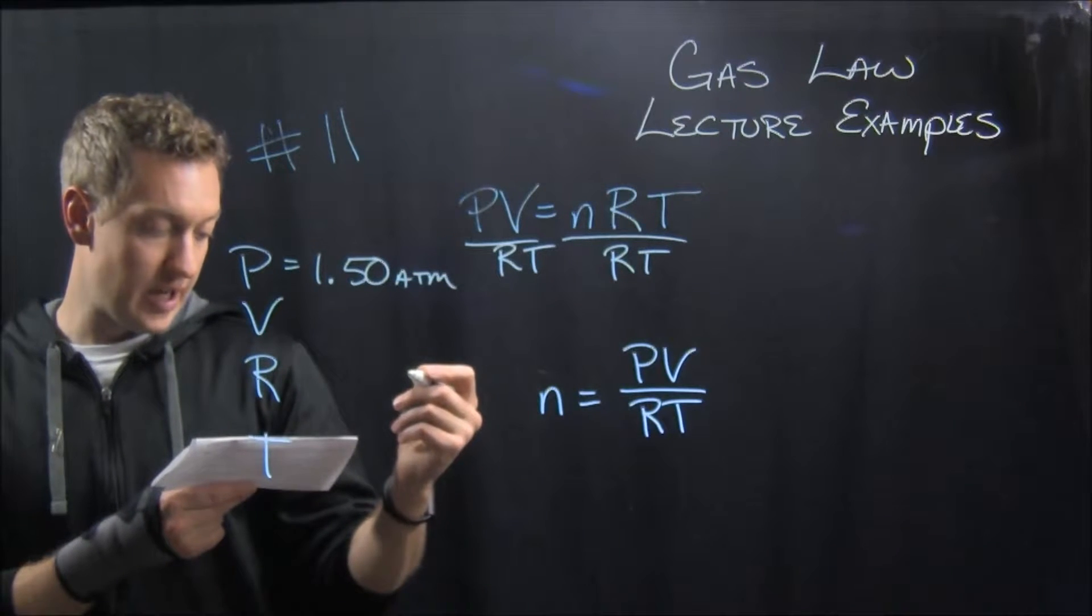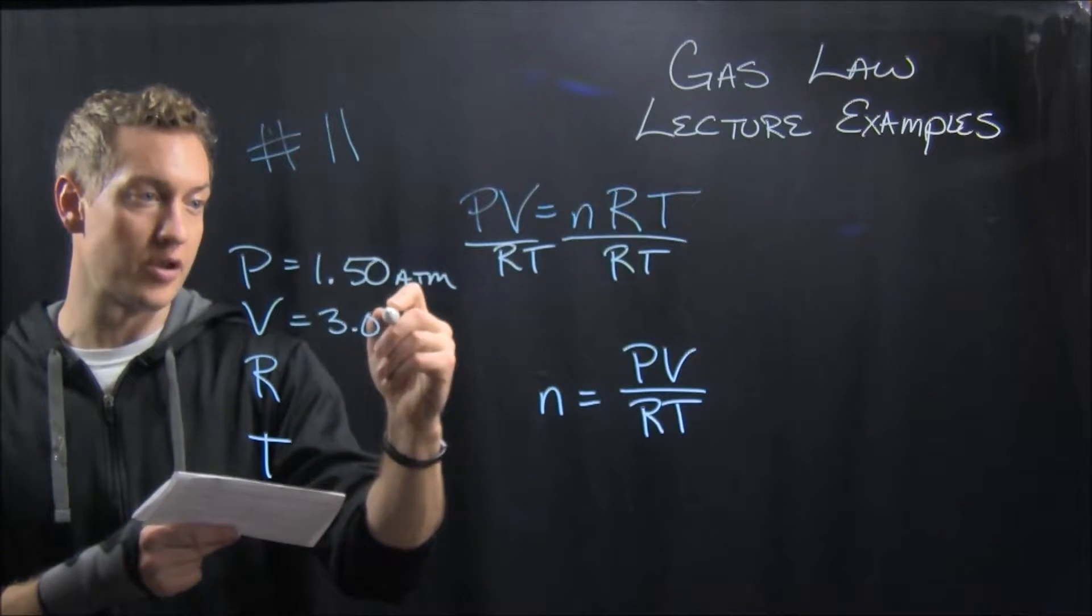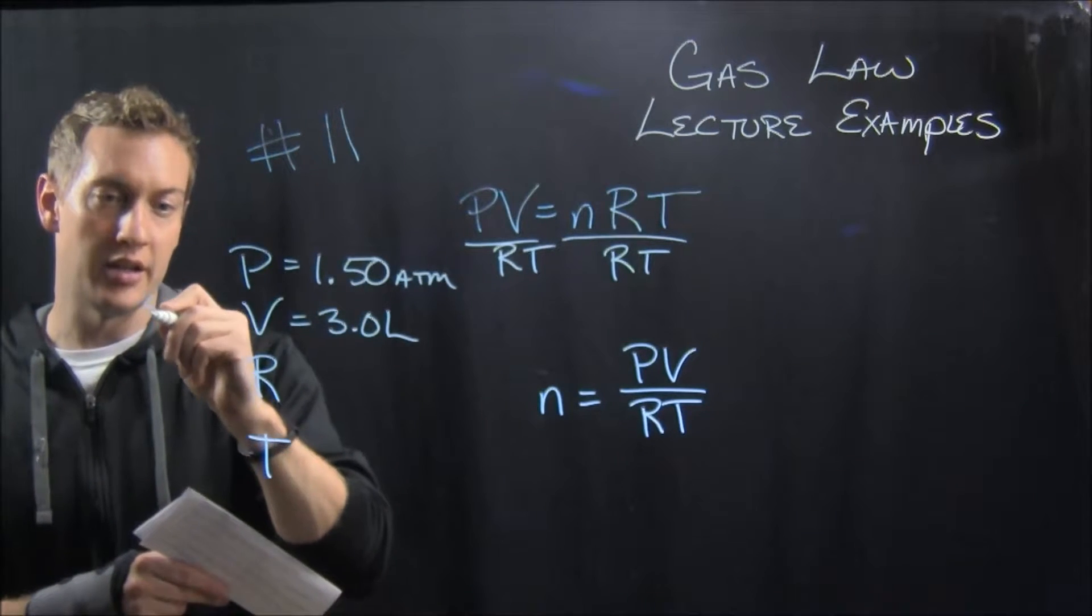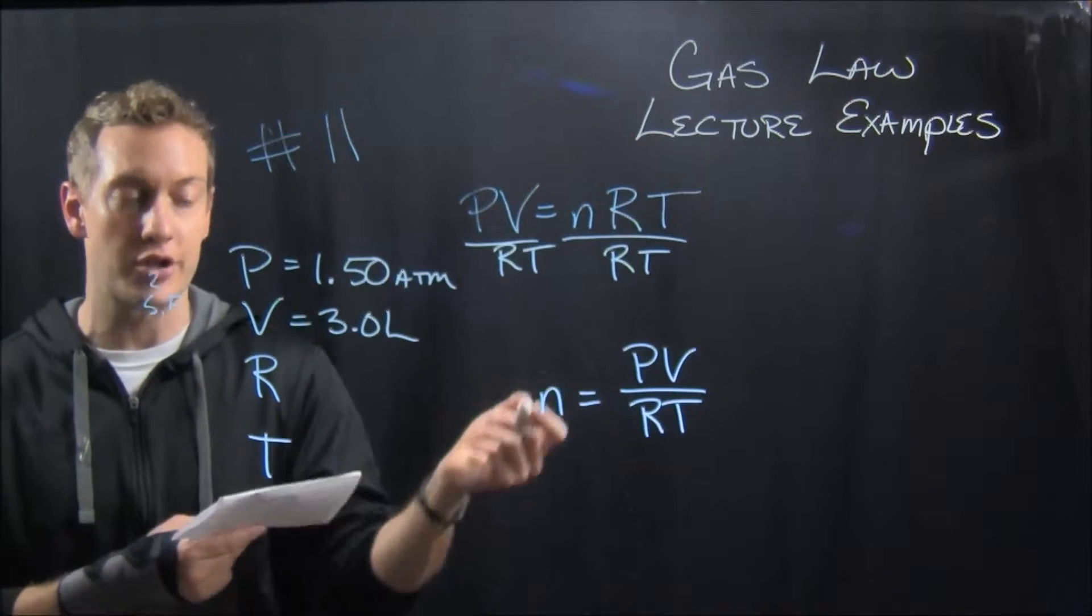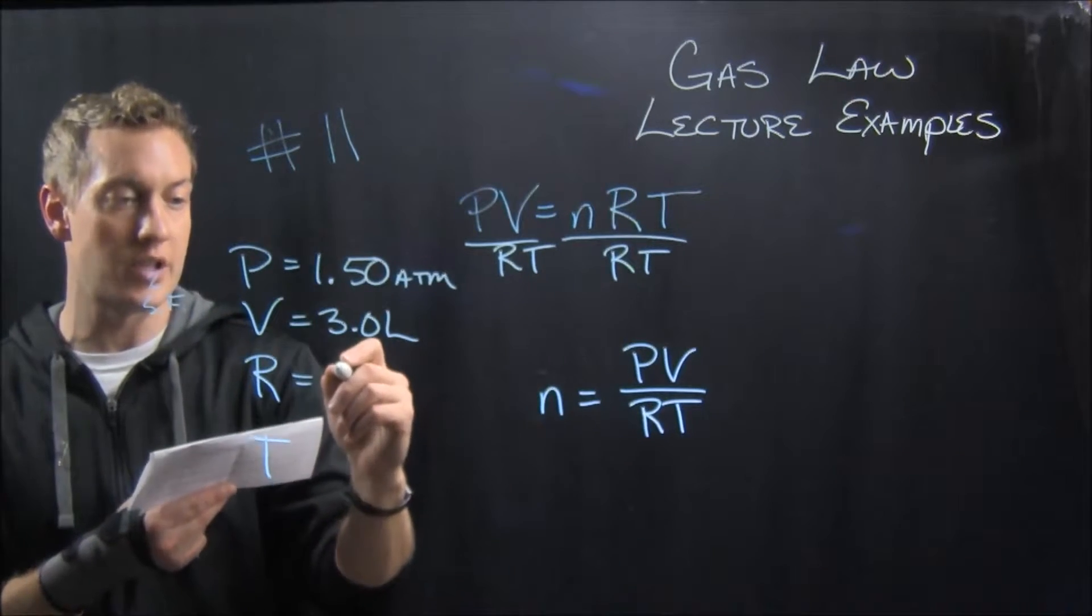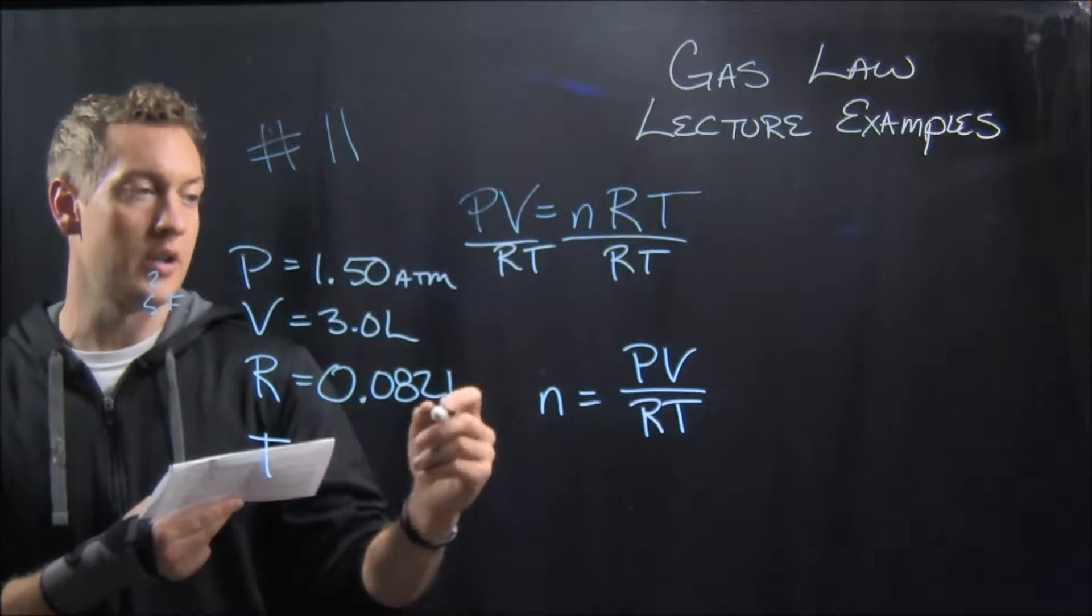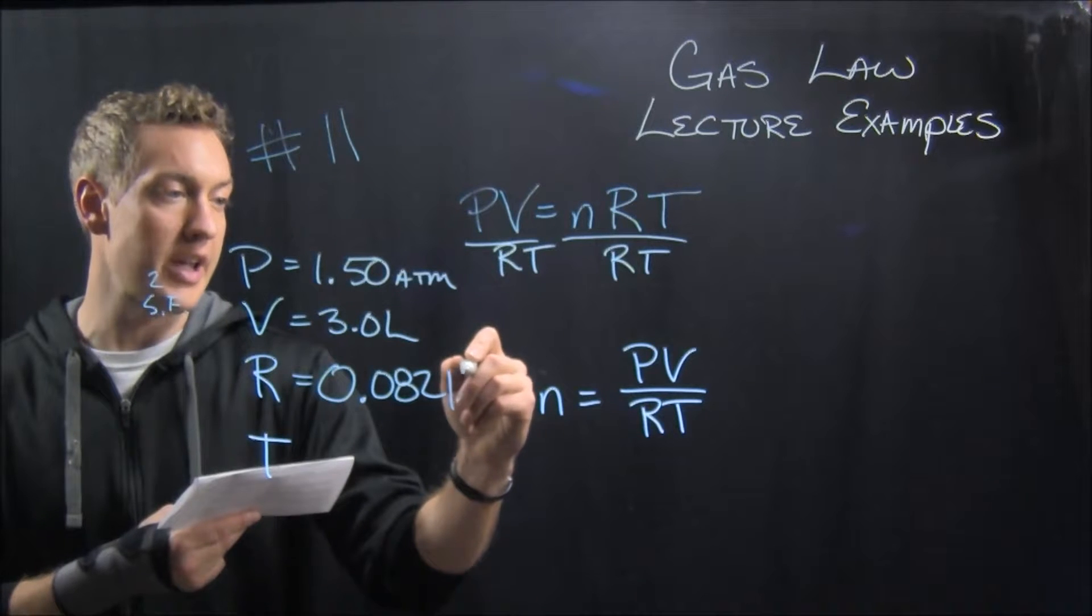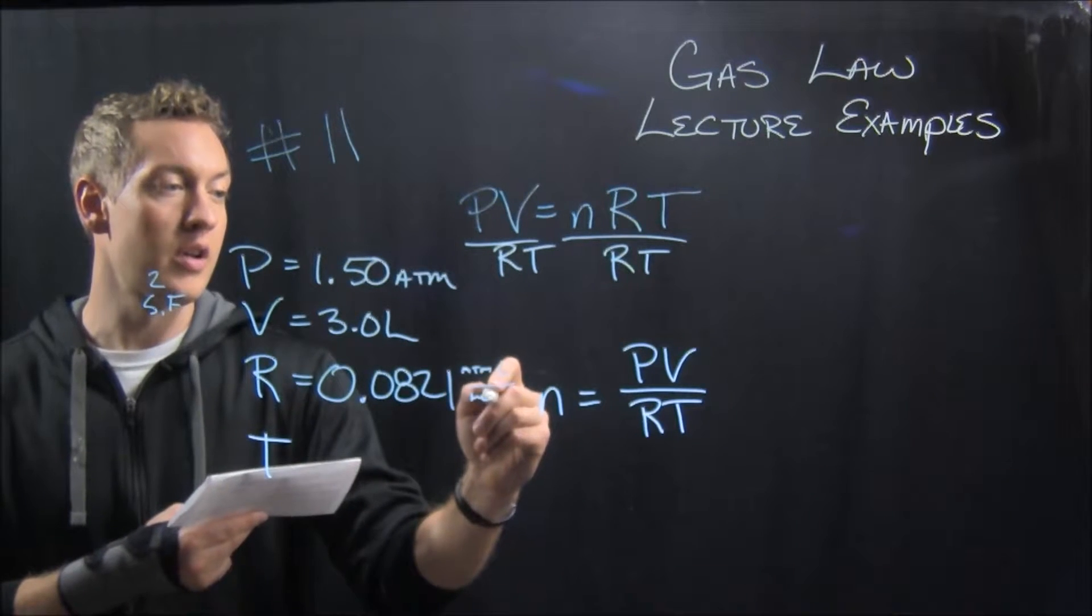It also says 3.0 liters, so 3.0 liters. That kind of catches my eye, sig fig-wise. That's only 2 sig figs, so that means my answer is only going to get rounded to 2 sig figs. R is 0.0821. The unit on R is atmosphere liters per mole Kelvin.